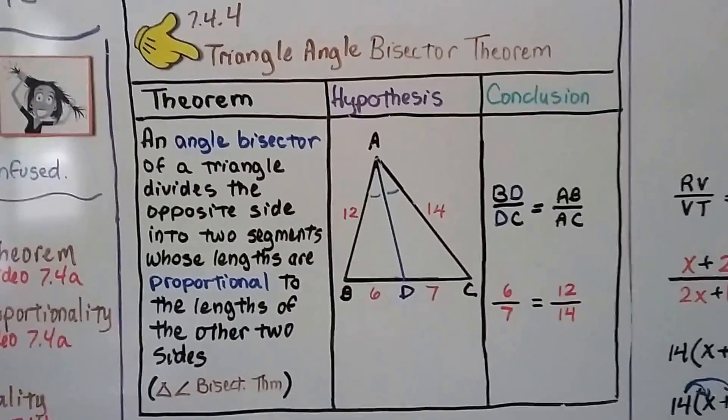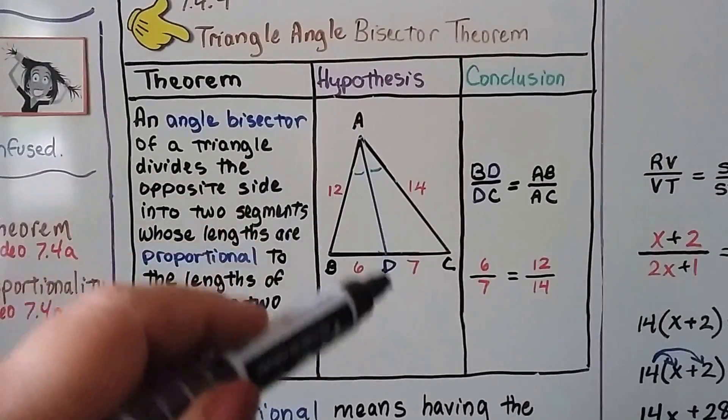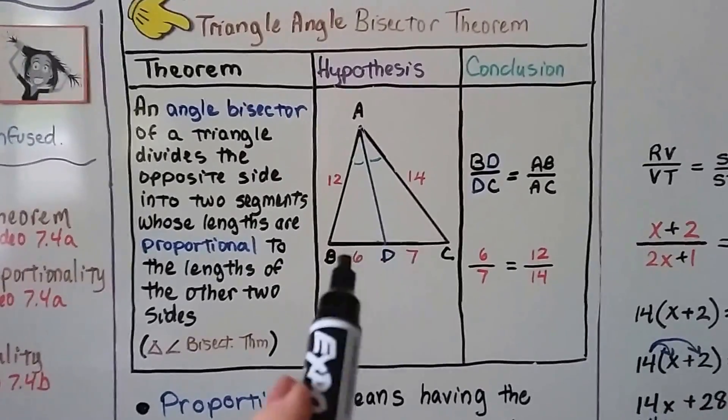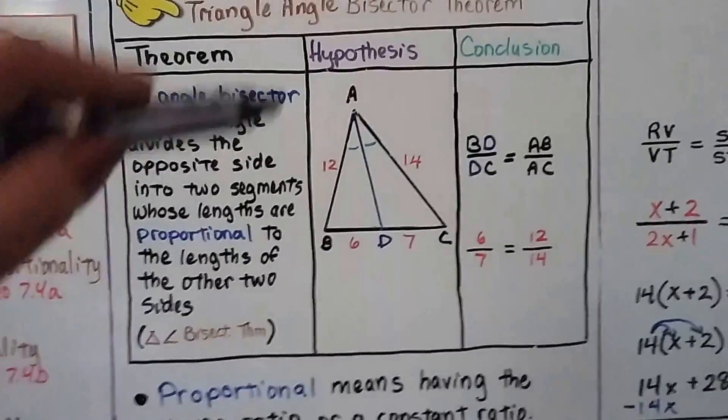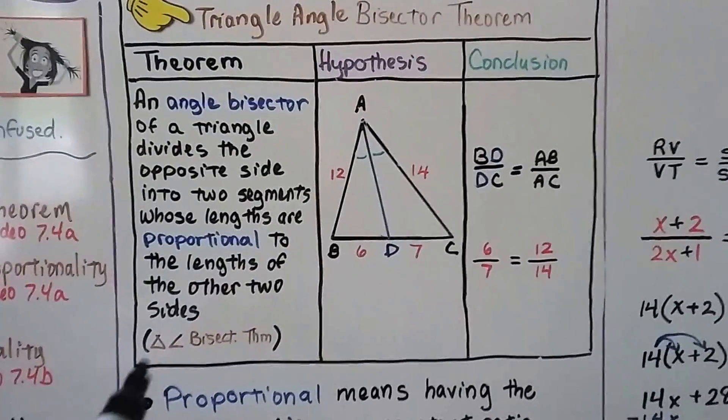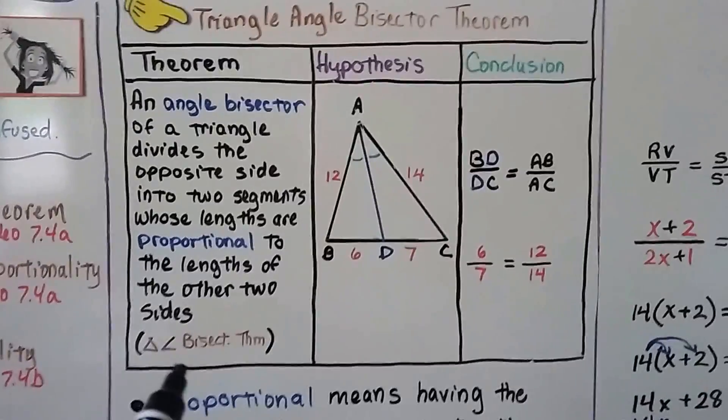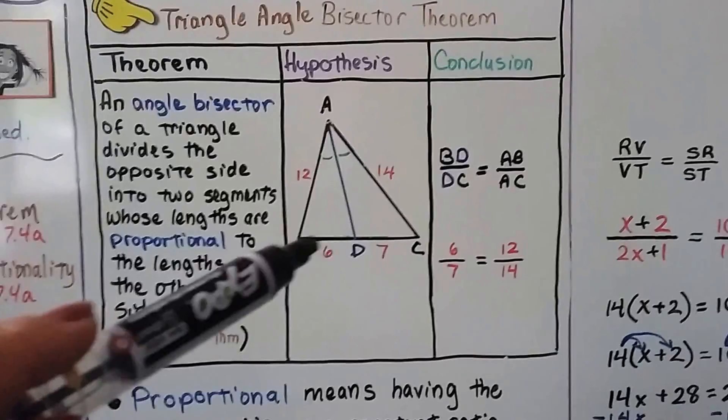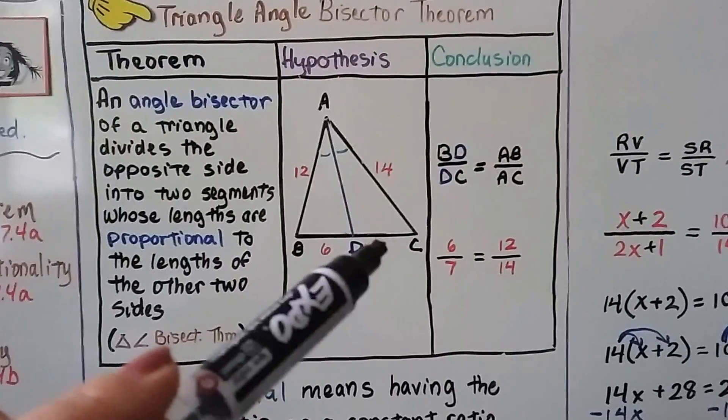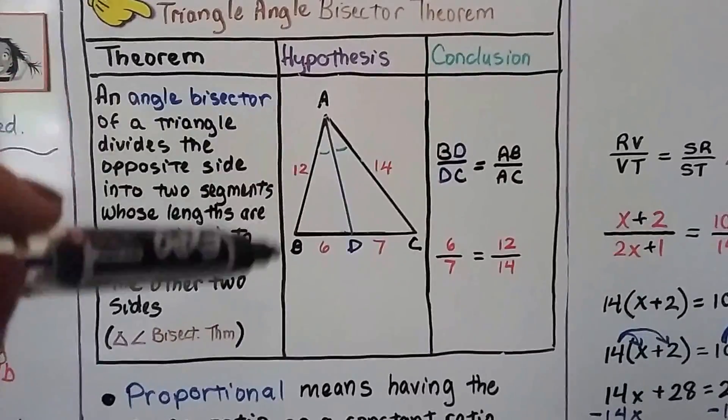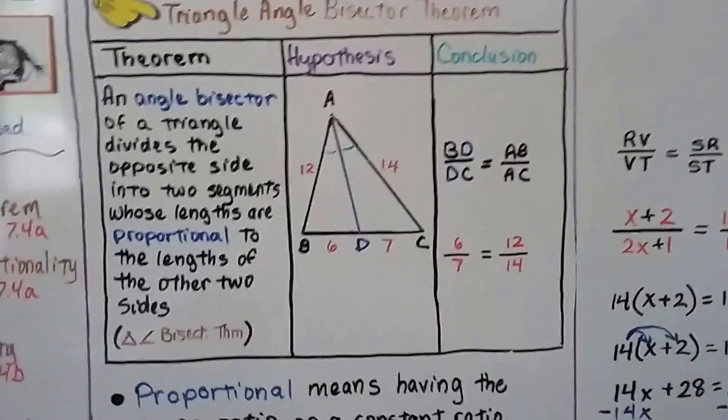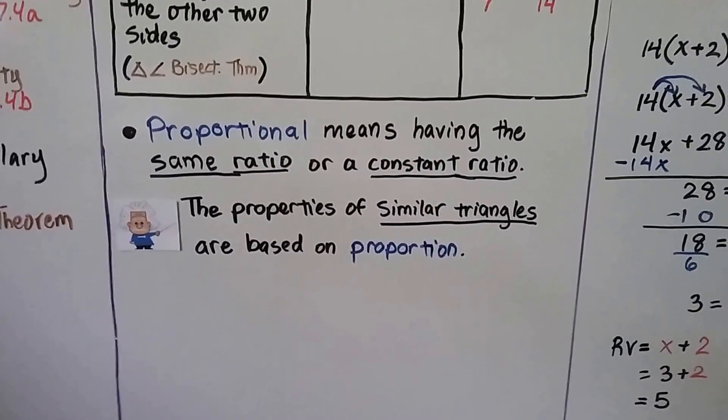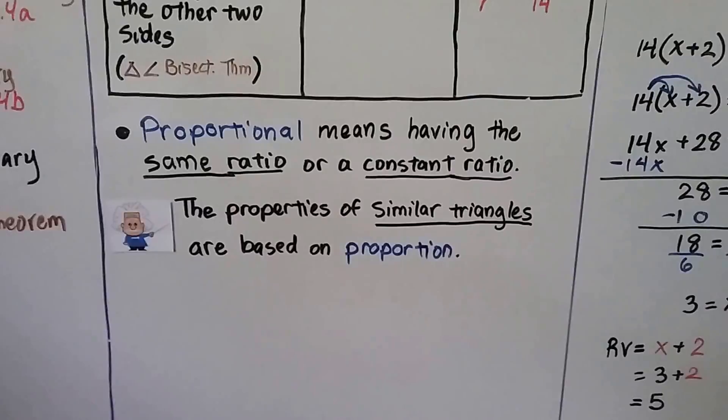The triangle angle bisector theorem says an angle bisector, that's this AD, of a triangle divides the opposite side into two segments whose lengths are proportional to the lengths of the other two sides. And in geometric notation, we can write the triangle angle bisector theorem. We've got BD, this 6, over DC, the 7, is equal to AB, the 12, over AC, the 14. Remember, proportional means having the same ratio or a constant ratio, and the properties of similar triangles are based on proportion.